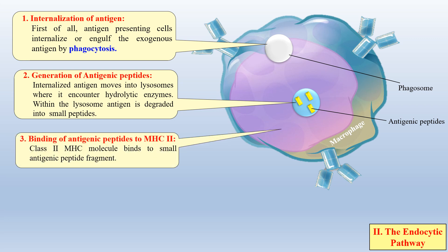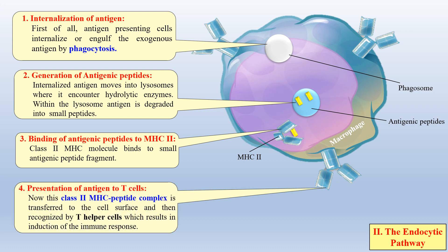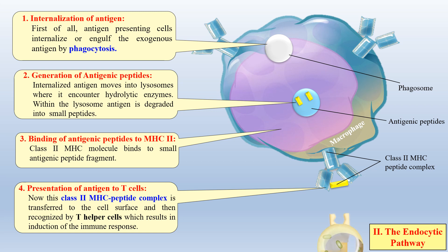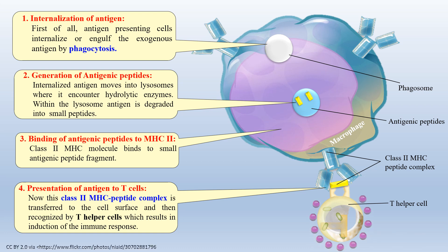In the next step, these small antigenic peptides will bind to the class 2 MHC molecule. As you can see, this is the class 2 MHC molecule and these peptides bind to it. Now this MHC 2 molecule and antigenic peptide complex will be presented to the T helper cell. It moves to the surface of the cell, as you can clearly see, and is now exposed to the T helper cell. The T helper cells recognize and bind this antigen and MHC 2 complex. After recognizing and binding with this complex, the T helper cell gets activated and releases signals to activate other cells like B cells and T cells, ultimately performing the immune response.